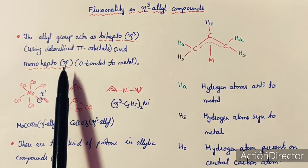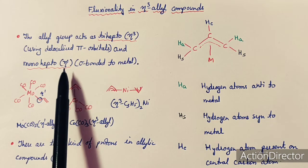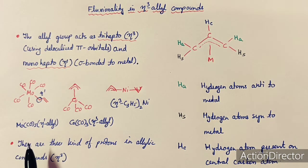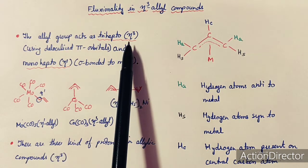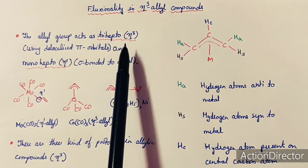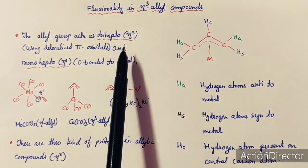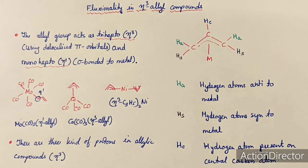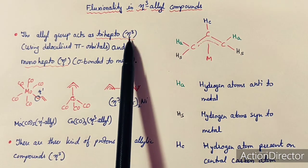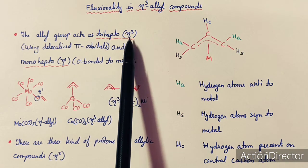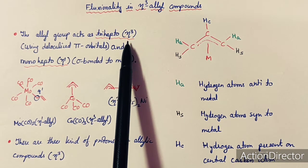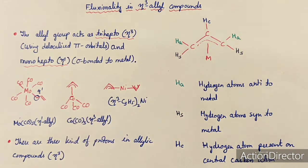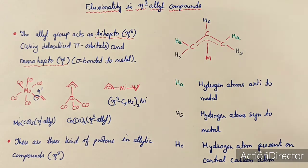In the case of an Eta-1 complex, the allyl group is attached to the metal center through one carbon atom, while in the trihapto form, all three carbon atoms of the allyl group are attached to the metal center. Eta-3 is a three-electron donor allyl group, while Eta-1 is a one-electron donor allyl group.